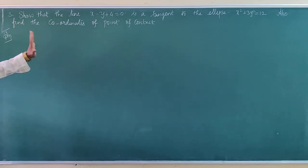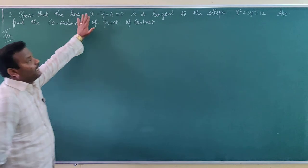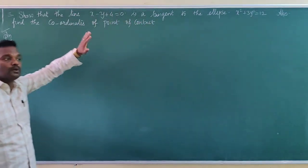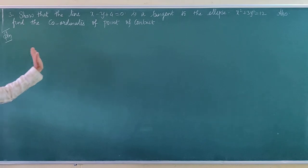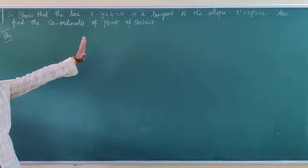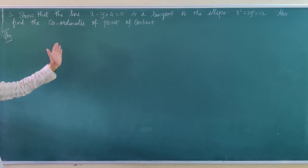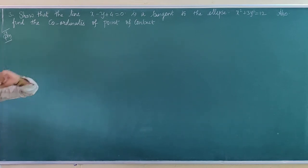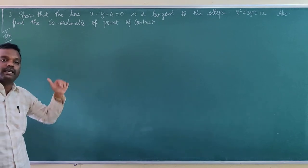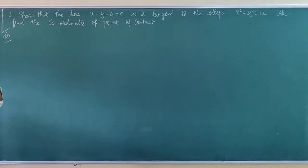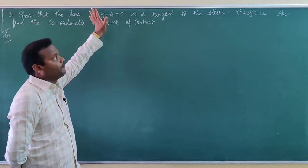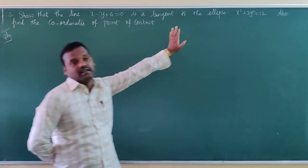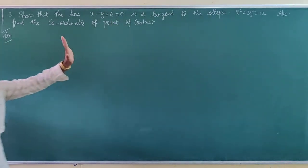We are answering two questions. First, you have to show that this line is a tangent to the ellipse. We know the condition for the line y equal to mx plus c to be a tangent to the ellipse — that is, c squared is equal to a squared m squared plus b squared. If the condition is verified, we can say that the line is a tangent. We also know the formula to find the point of contact. First, you have to write the equation of the line and the equation of the ellipse in standard form, then check the condition.